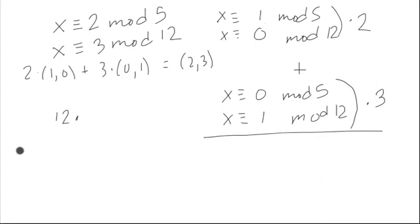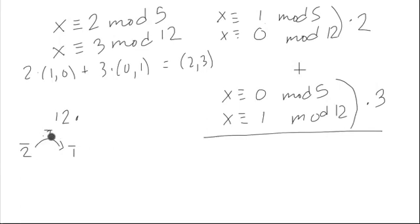Let's think of 12 as being like 2 in mod 5 arithmetic. Let a bar represent mod 5. 2-bar times what? Well, 2 times 3 would give you 1-bar mod 5. So that means we just need to take 12 times 3. 12 times 3 should give us something that's 1 mod 5 — you can try it out, it's 36, and yes it does. And it's 0 mod 12. So there's a solution. Our solution to the first part is 36.